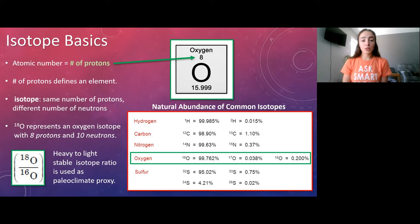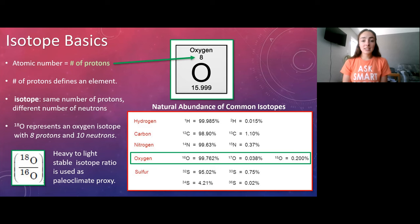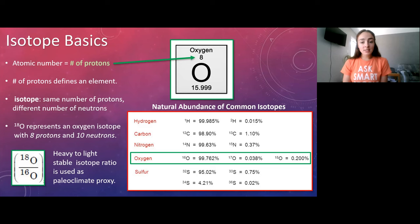We write isotopes in a specific notation that indicates the number of protons plus neutrons. For example, the most naturally abundant oxygen isotope — oxygen-16, which accounts for nearly 99.8% of all oxygen on Earth — has eight protons and eight neutrons, since eight protons plus eight neutrons equals 16.